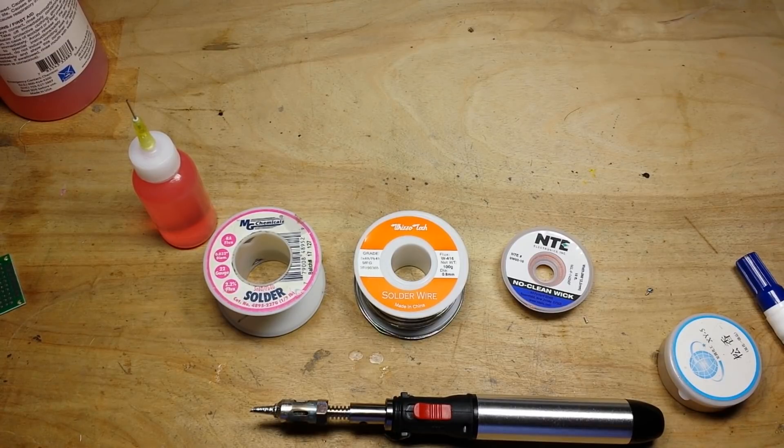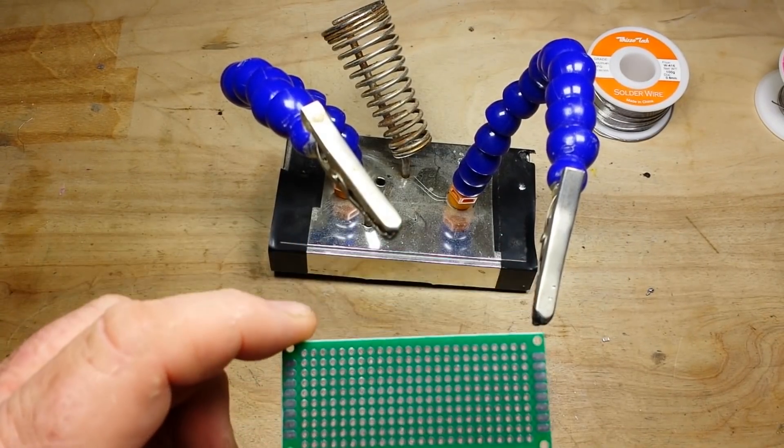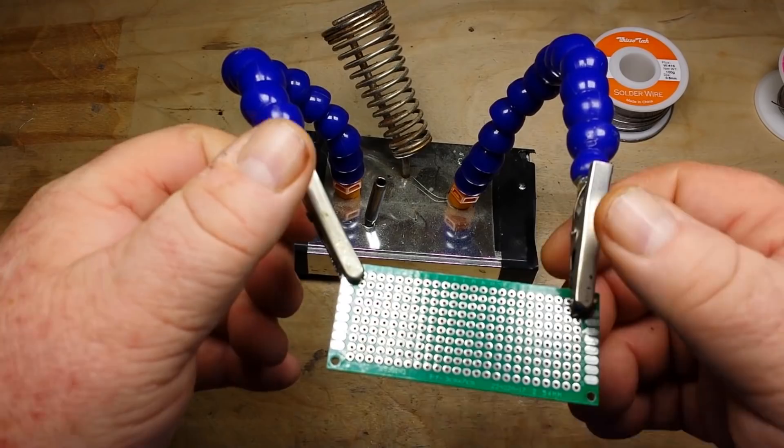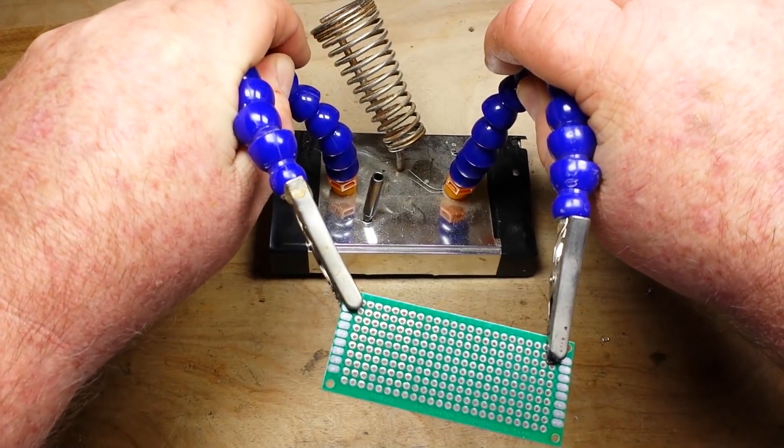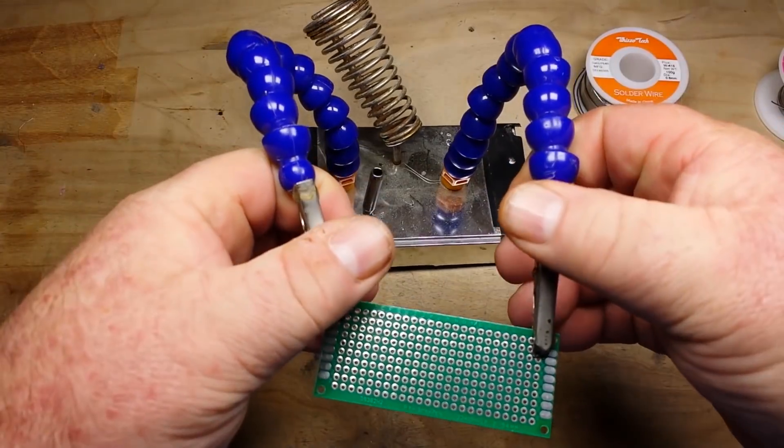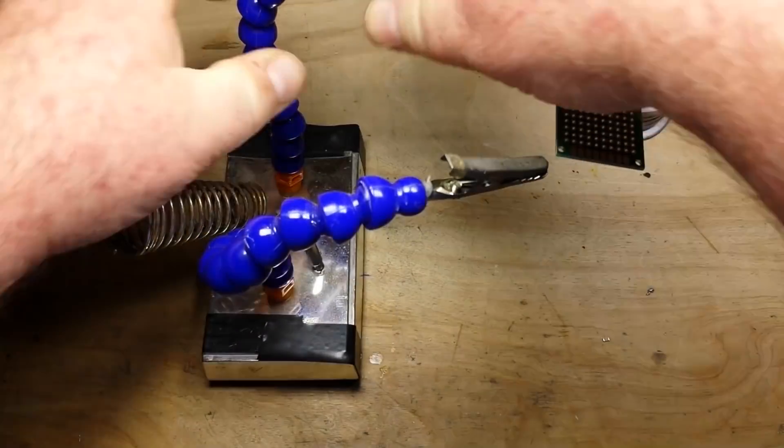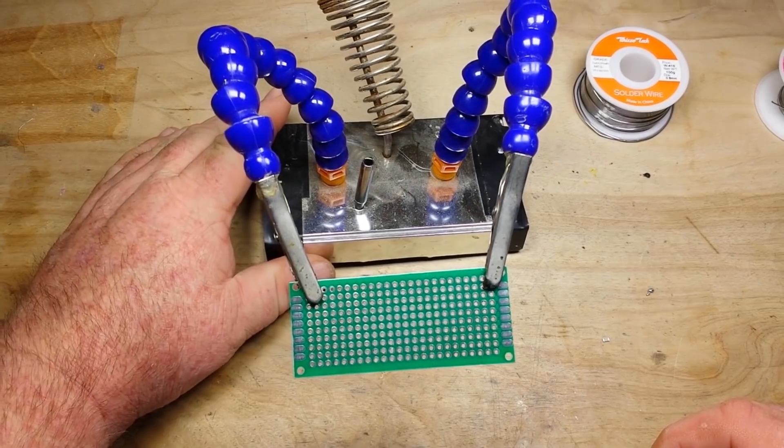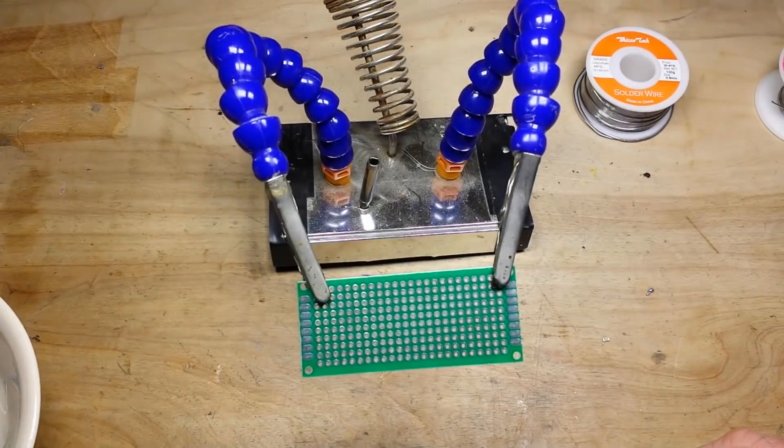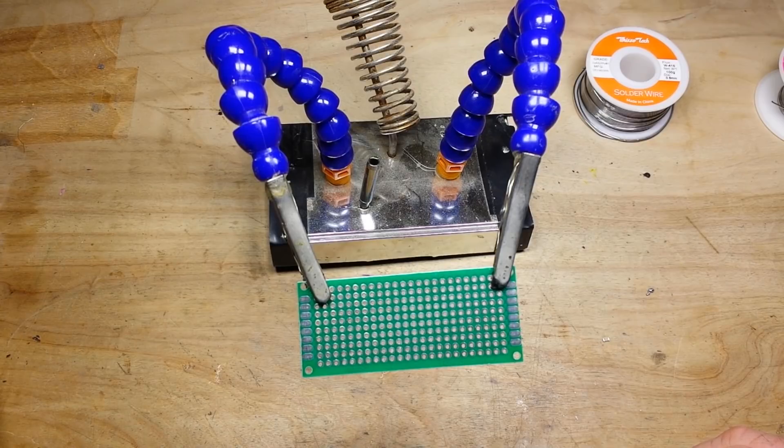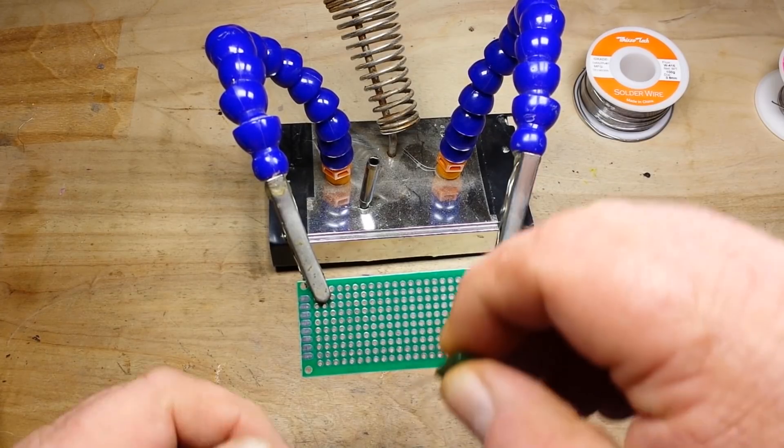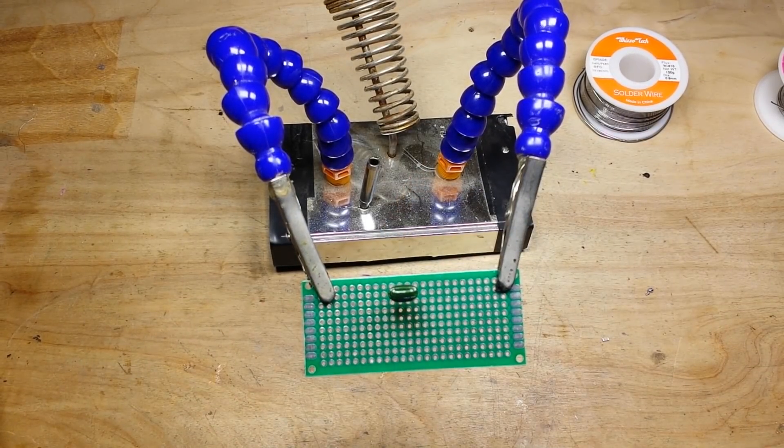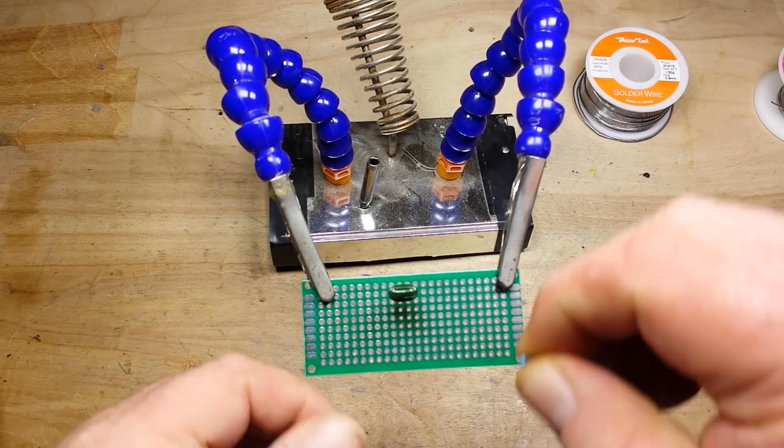So I've got us a little proto board here, trying to get it so it doesn't reflect back in your face. It's all about the angle of the dangle. Yeah, that's not bad, right? And then we have some random components from the bowl of holding.